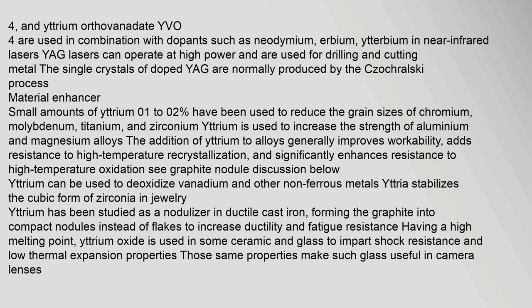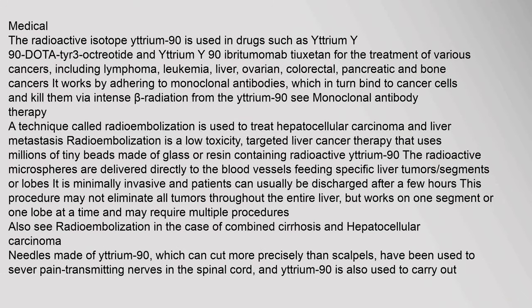The radioactive isotope Yttrium-90 is used in drugs such as Yttrium-Y90-DOTATOC and Yttrium-Y90-Ibritumomab Tiuxetan for the treatment of various cancers, including lymphoma, leukemia, liver, ovarian, colorectal, pancreatic and bone cancers. It works by adhering to monoclonal antibodies, which in turn bind to cancer cells and kill them via intense beta radiation from Yttrium-90. A technique called radioembolization is used to treat hepatocellular carcinoma and liver metastasis. Radioembolization is a low-toxicity, targeted liver cancer therapy that uses millions of tiny beads made of glass or resin containing radioactive yttrium-90. The radioactive microspheres are delivered directly to the blood vessels feeding specific liver tumors, segments or lobes. It is minimally invasive and patients can usually be discharged after a few hours.